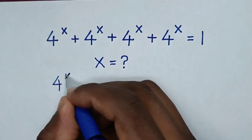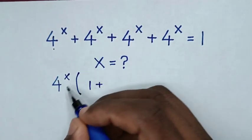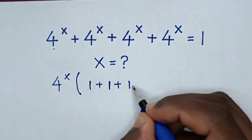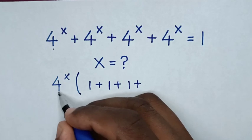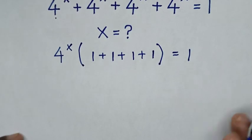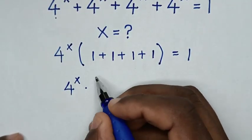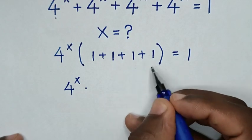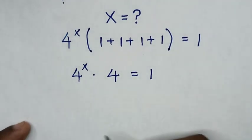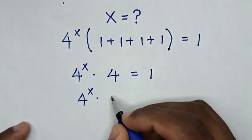Then this divided by this is 1, plus 1, plus 1, plus 1, bracket is equal to 1. In the next step it will be 4 power x times 1 plus 1 plus 1 plus 1, which is 4, is equal to 1. So in the next step it will be 4 power x times 4.